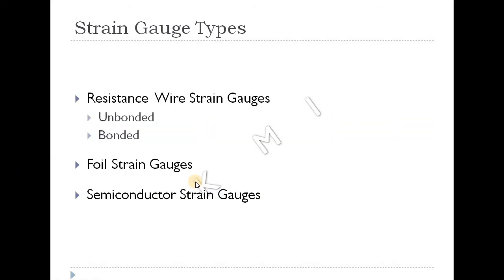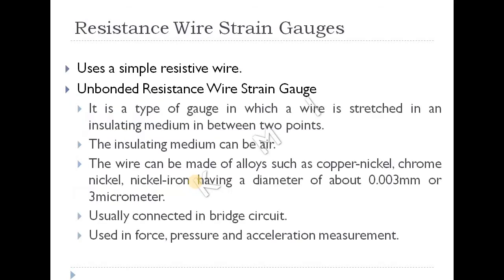There are three types of strain gauge: resistant wire strain gauge, foil strain gauge, and semiconductor strain gauge. In the first one, the resistance wire strain gauge, there are unbonded strain gauge and bonded strain gauge.